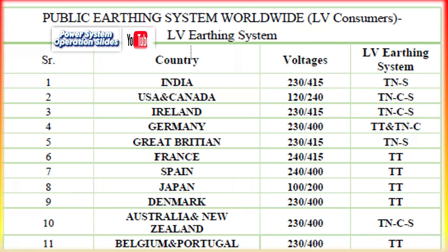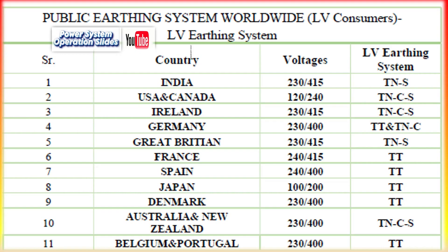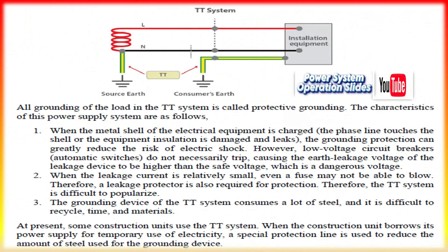Additional insights — why the distinction matters: each earthing arrangement has its trade-offs. TT systems are excellent at avoiding interference from the supply system but require robust local protection mechanisms. IT systems help ensure uninterrupted service during a single fault but demand vigilant monitoring for multiple faults. TN systems, with their subdivisions, offer varying balances of safety, cost, and performance.